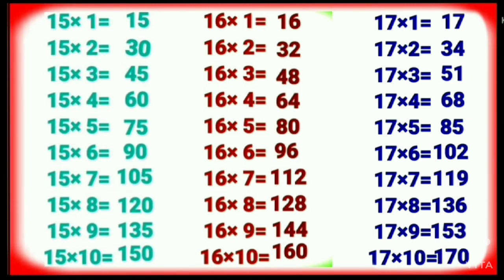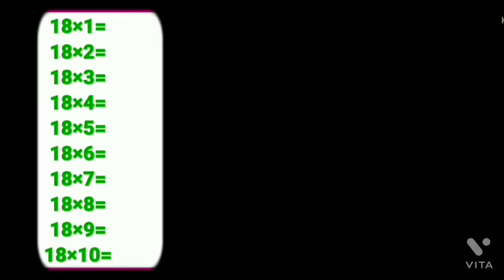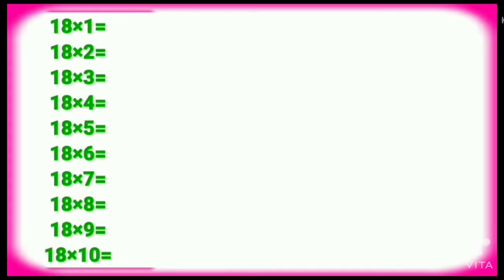Seventeen tens are one seventy. Table of Eighteen. Eighteen ones are eighteen. Eighteen twos are thirty-six. Eighteen threes are fifty-four. Eighteen fours are seventy-two. Eighteen fives are ninety.